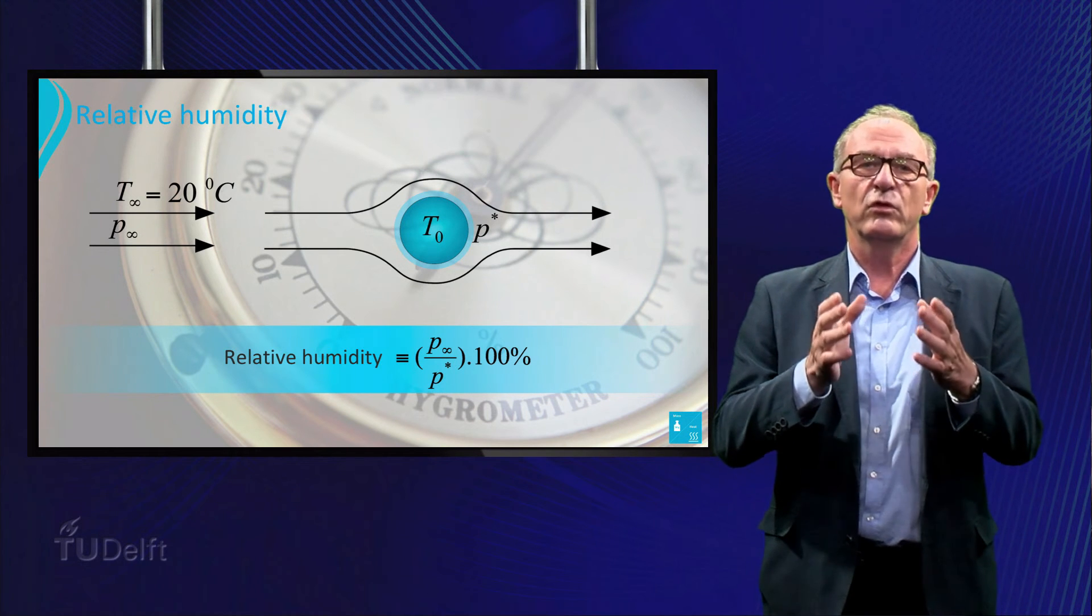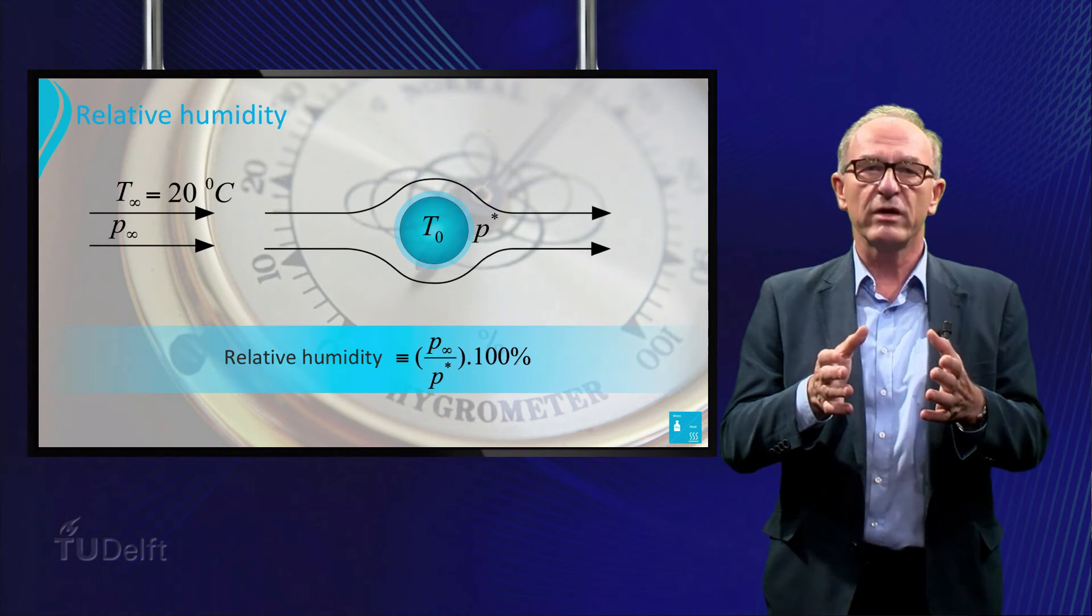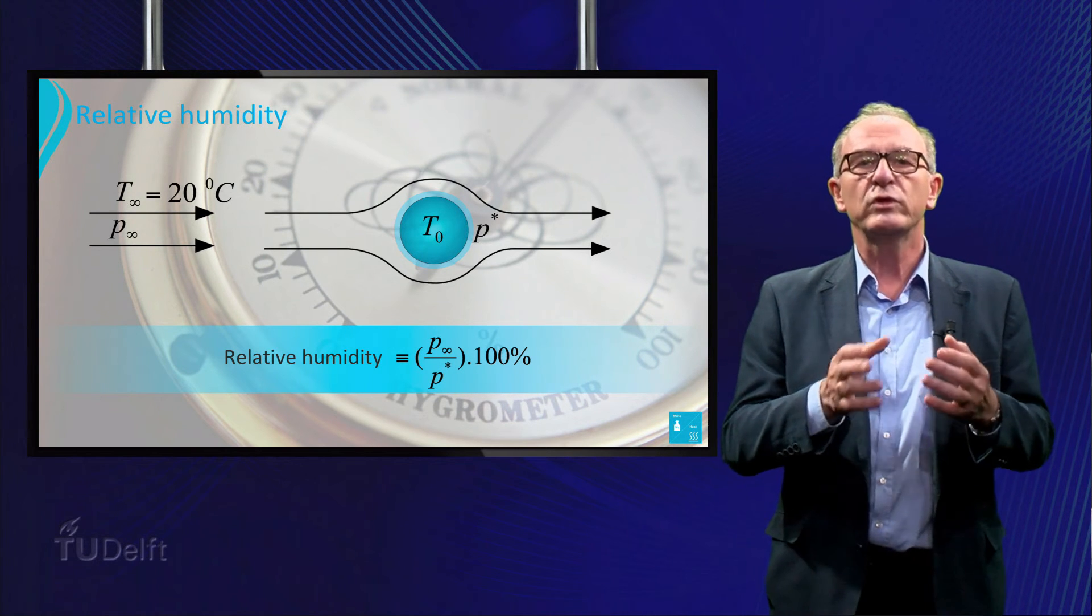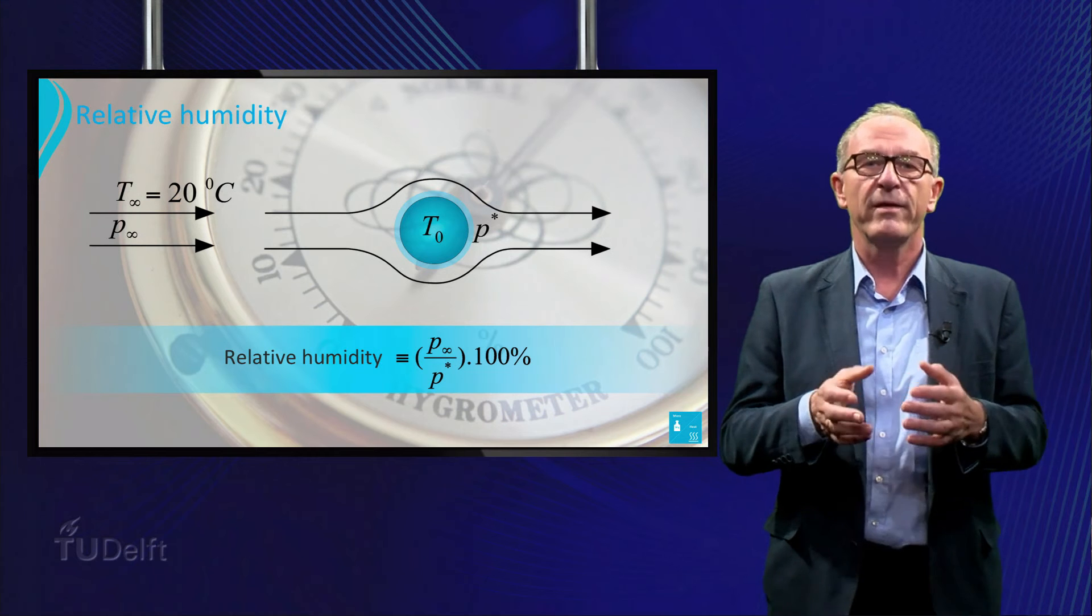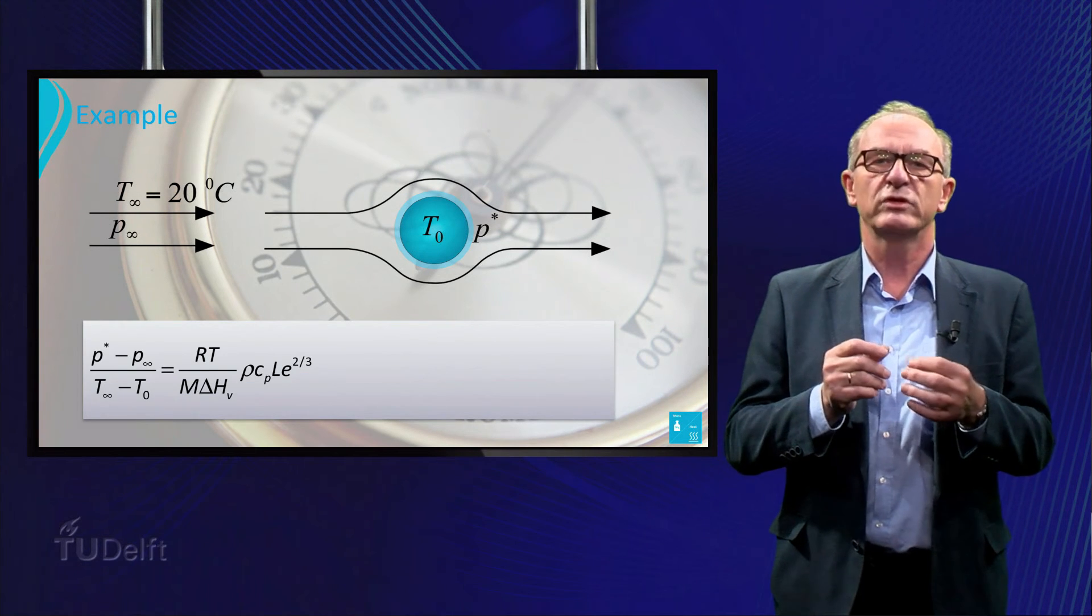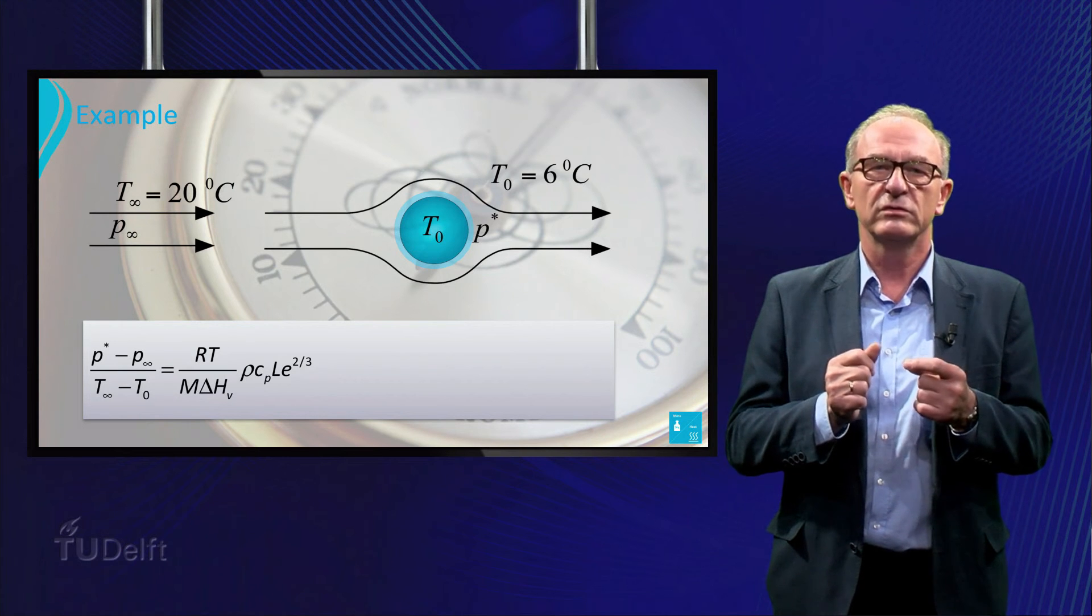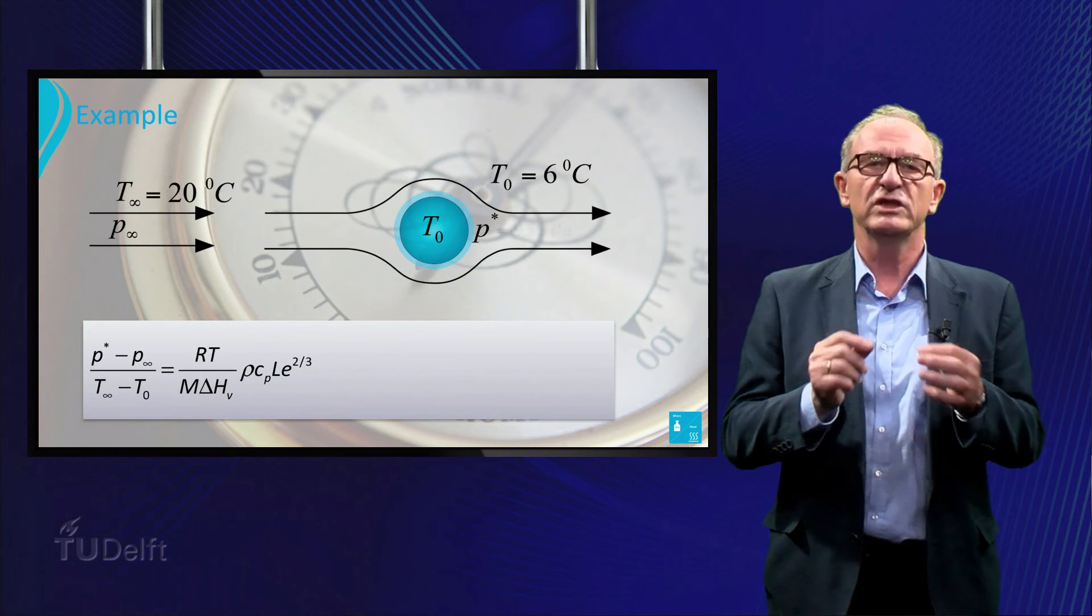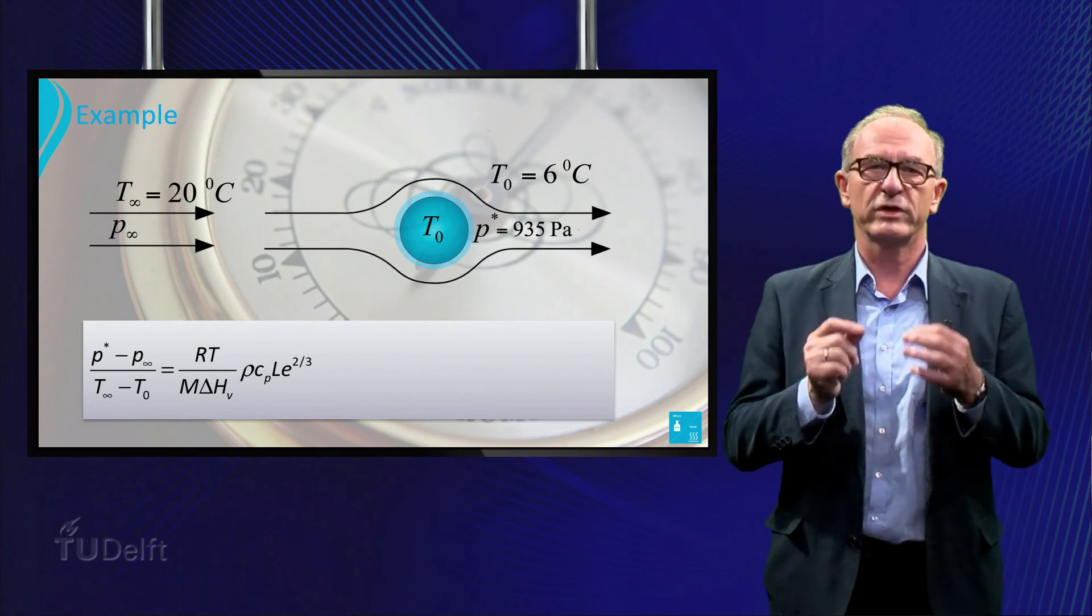So if we measure the wet-bulb temperature T_0 in an airflow with a temperature of 20°C, we are able to calculate the relative humidity. In this case, the thermometer indicates a wet-bulb temperature T_0 of 6°C. We know that the vapor pressure of water P* at 6°C is equal to 935 Pascals.